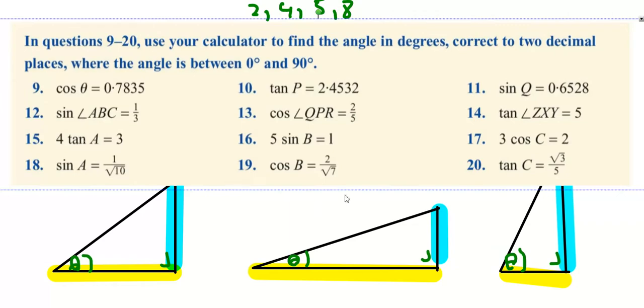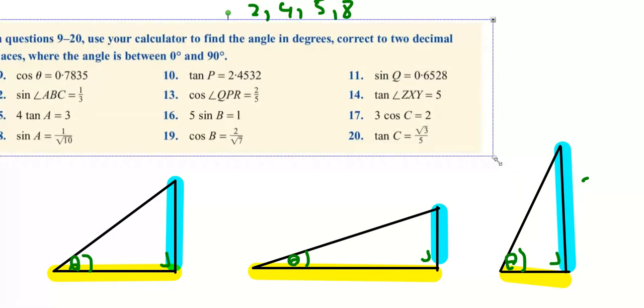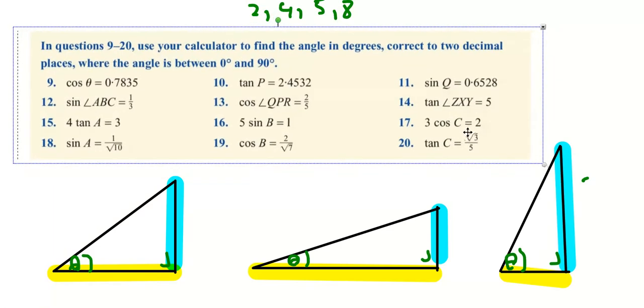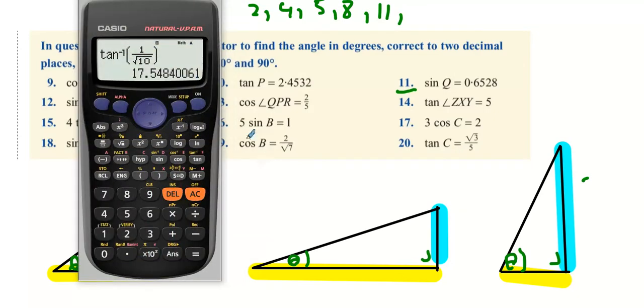So what we have is a couple more questions here, correct to two decimal places. What I'm just going to do is mess around with one or two. So sine theta, question 11. All you have to do is just sine inverse it, so sine inverse 0.6528.